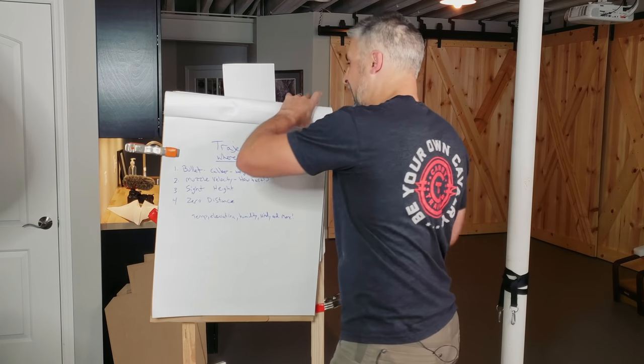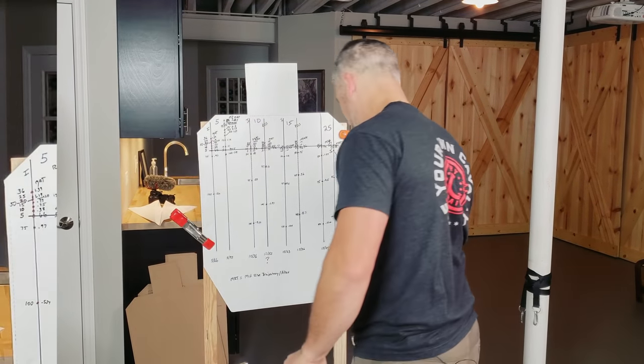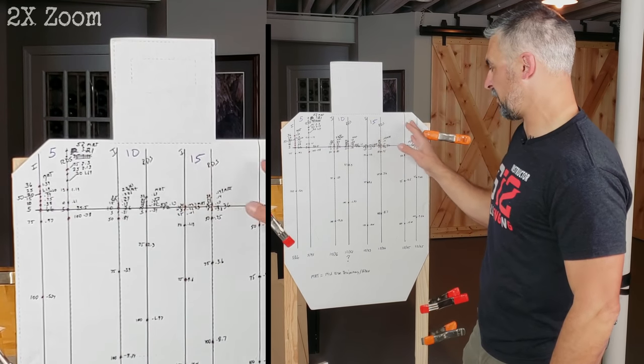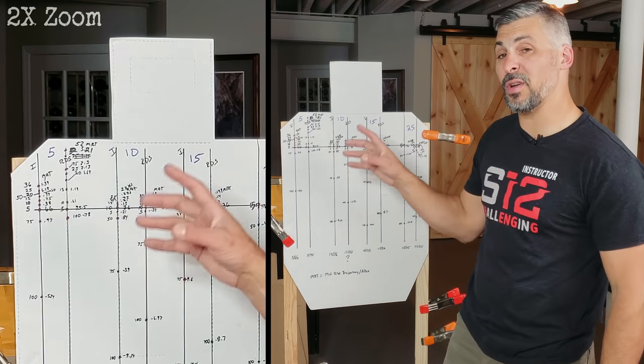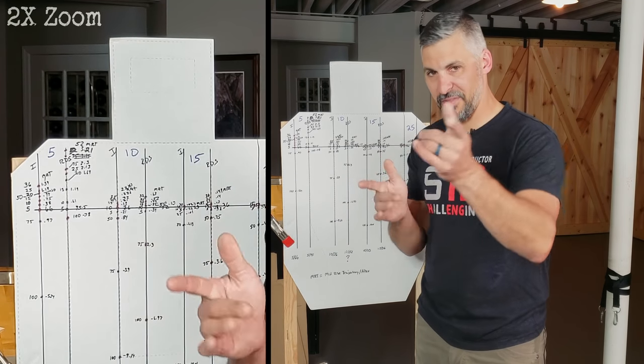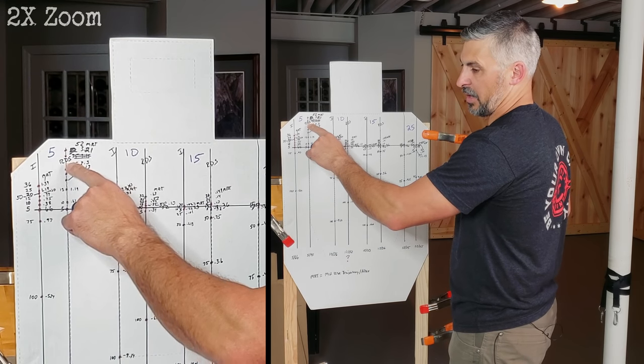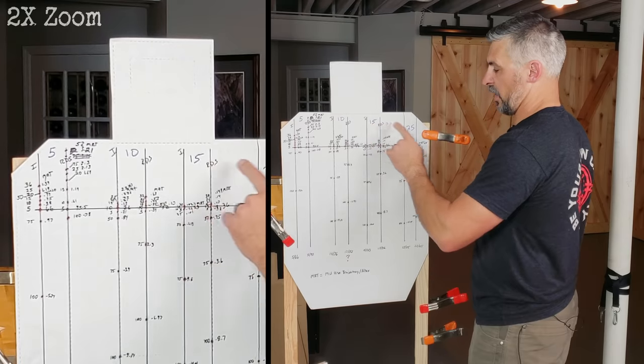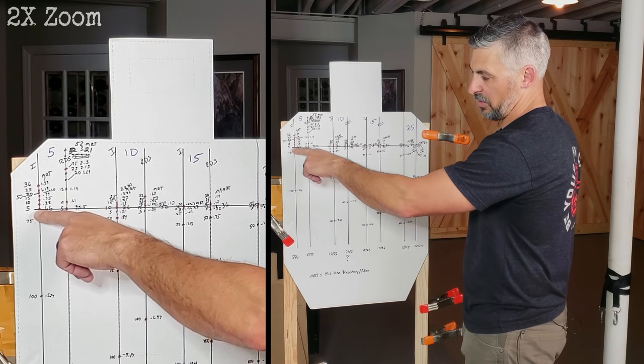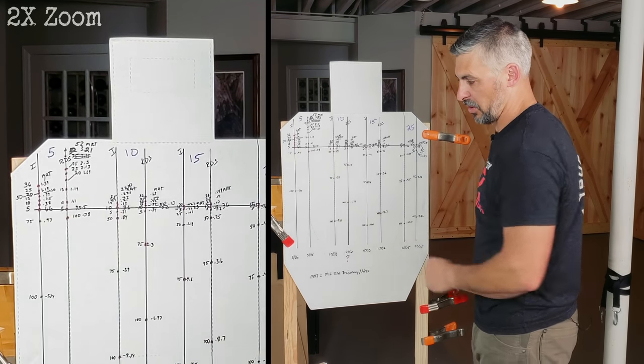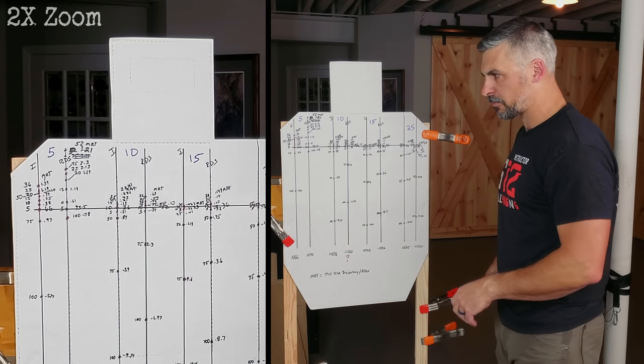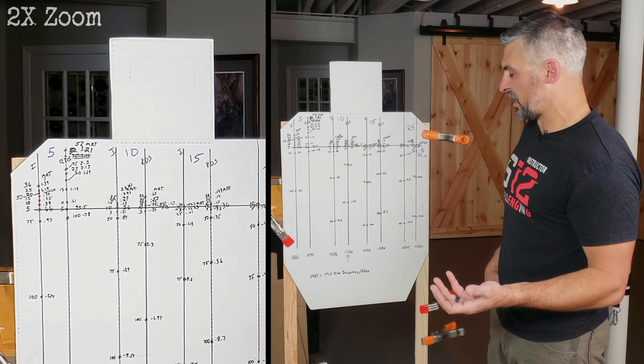So what I did here is I put together some various zeros. These vertical lines represent 5 yards, 10 yards, 15, and 25. I picked those numbers just because I see people shooting and zeroing at these distances. So I did irons, red dots. The horizontal line is point of aim. All of the red marks are bullet strikes.